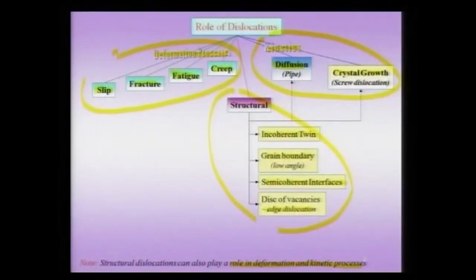Student question: Can edge dislocations also play a role in crystal growth? Yes — when an edge dislocation leaves the surface of a crystal, it can provide a high-energy site where an add-atom might attach. However, this role is much more limited compared to the role of screw dislocations in crystal growth, where they clearly provide a very preferred site for add-atoms to attach. Edge dislocations could provide high-energy areas where heterogeneous nucleation of a surface step could start. But we should also note that structural dislocations can play roles in deformation and kinetic processes — for instance, dislocations in a low-angle grain boundary could leave the boundary and contribute to plasticity, or the boundary could pick up more dislocations and increase the tilt angle.